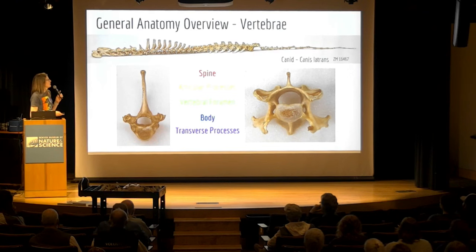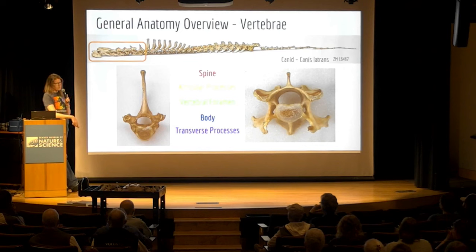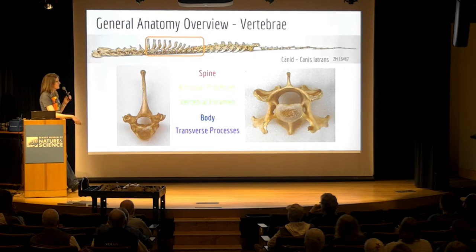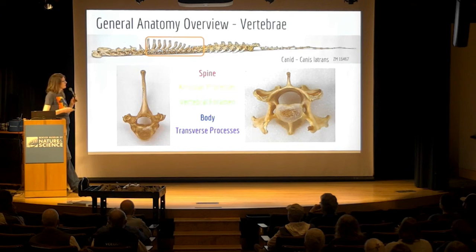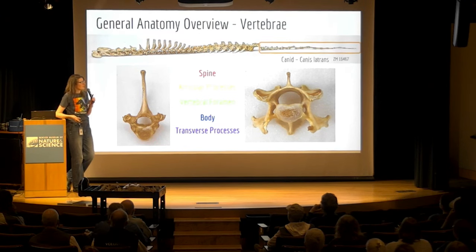We're going to go through each different section. The neck vertebrae are called the cervical vertebrae. Thoracic is your chest area. The lumbar is the back, then the sacrum, and then the caudal vertebrae.